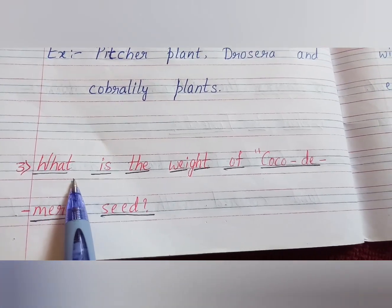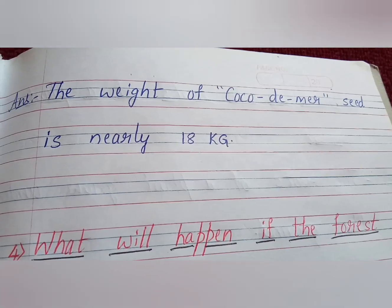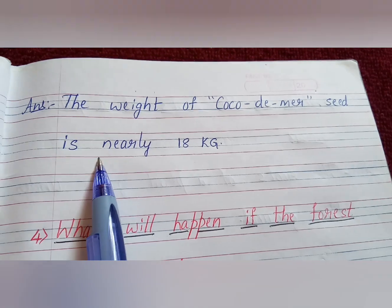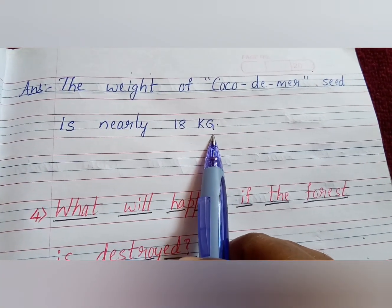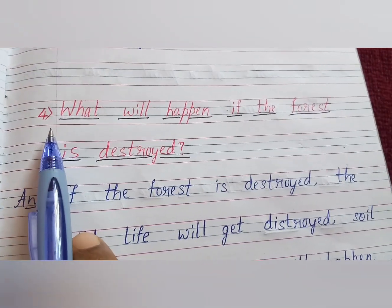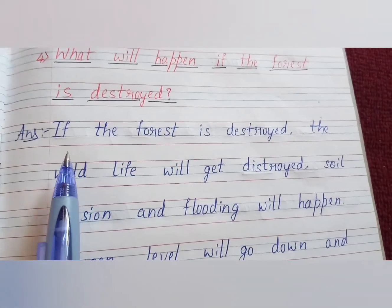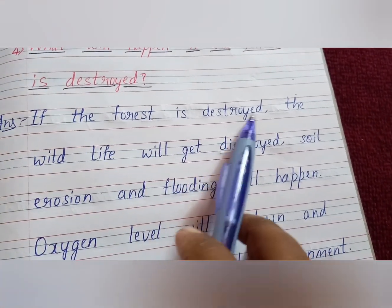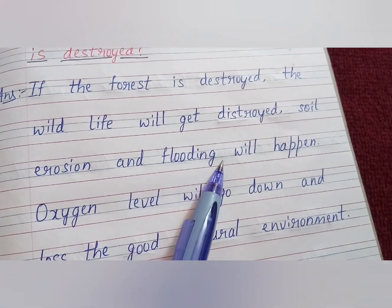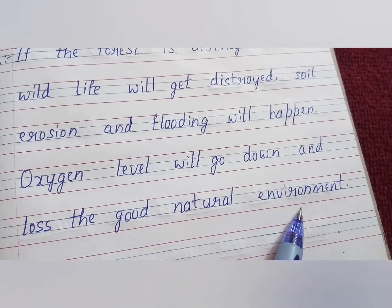Next question: what is the weight of the coco de mer seed? The weight of the coco de mer seed is nearly about 18 kg. Next question: what will happen if the forest is destroyed? If the forest is destroyed, wildlife will get destroyed, soil erosion and flooding will happen, oxygen level will go down, and we will lose a good natural environment.